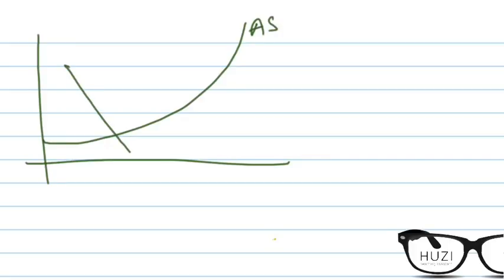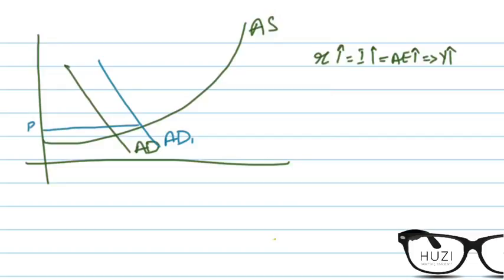Let's say this is the current aggregate demand curve. So if an easy money policy is used, this will lead to a rise in interest rates, a rise in investments, a rise in aggregate expenditure, and a rise in equilibrium income. So if we show the impact on the curve, aggregate demand will shift outwards. And if we take a look at the rise in the price levels, the price levels will rise by little, not extensively.